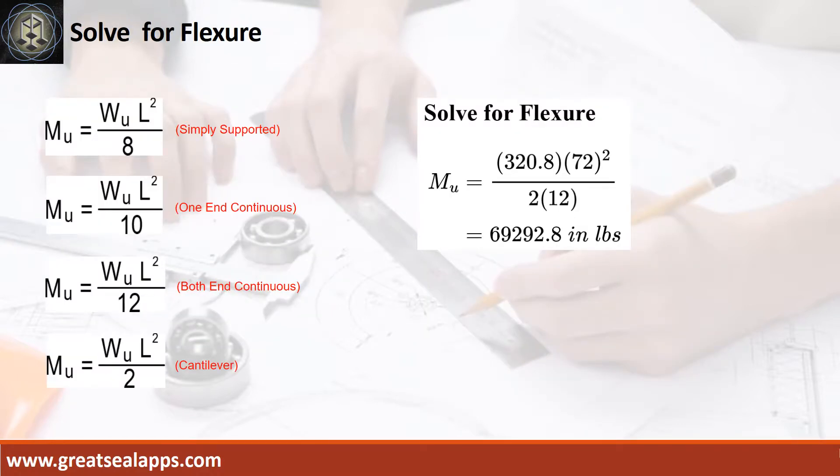Given factored load equals 320.8 pounds per foot, L equals 6 feet. The maximum moment is 69,292.8 inch pounds.